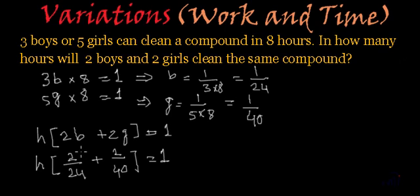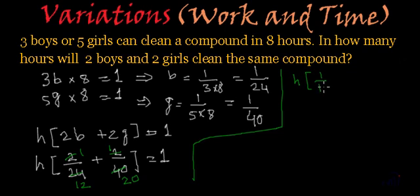And these fractions can further be solved. This will be 2 1s are 2, 2 1s are 2, 2 2s are 4. Here it will be 2 1s are 2, 2 2s are 4 and 0. So from here we will get H multiplied by 1 by 12 plus 1 by 20 is equal to 1.